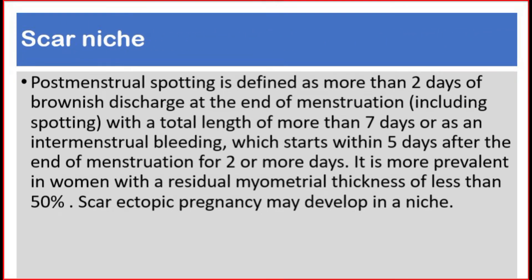Post-menstrual spotting is defined as more than two days of brownish discharge at the end of menstruation, including spotting, with a total length of more than seven days, or as inter-menstrual bleeding which starts within five days after the end of menstruation for two or more days. It is more prevalent in women with a residual myometrial thickness of less than 50%.